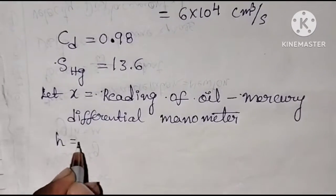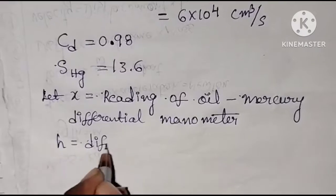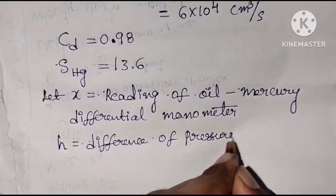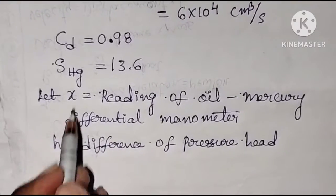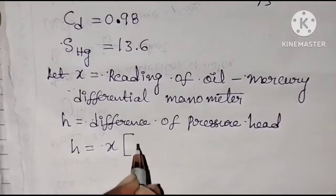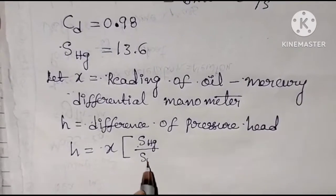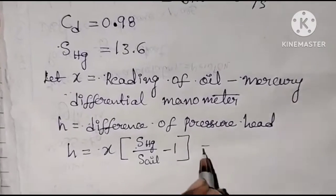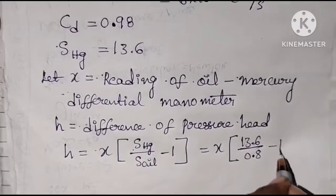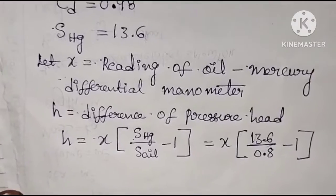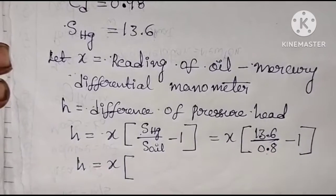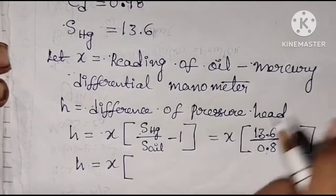We have one more term, H, which means difference of pressure head. There is a relation between x and h. H is equal to x into (S_hg / S_oil minus 1). So h equals x into (13.6 / 0.8) minus 1.